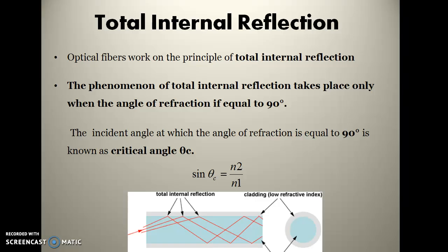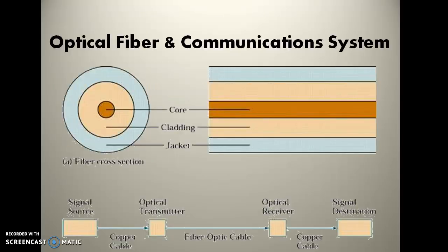Total internal reflection is a phenomenon in which there is successive reflection of light inside the core surface. This can be achieved by inserting light at an angle equal to the critical angle theta-c. The formula is: sine(theta-c) = n2 / n1, where n2 is the refractive index of the cladding and n1 is the refractive index of the core.